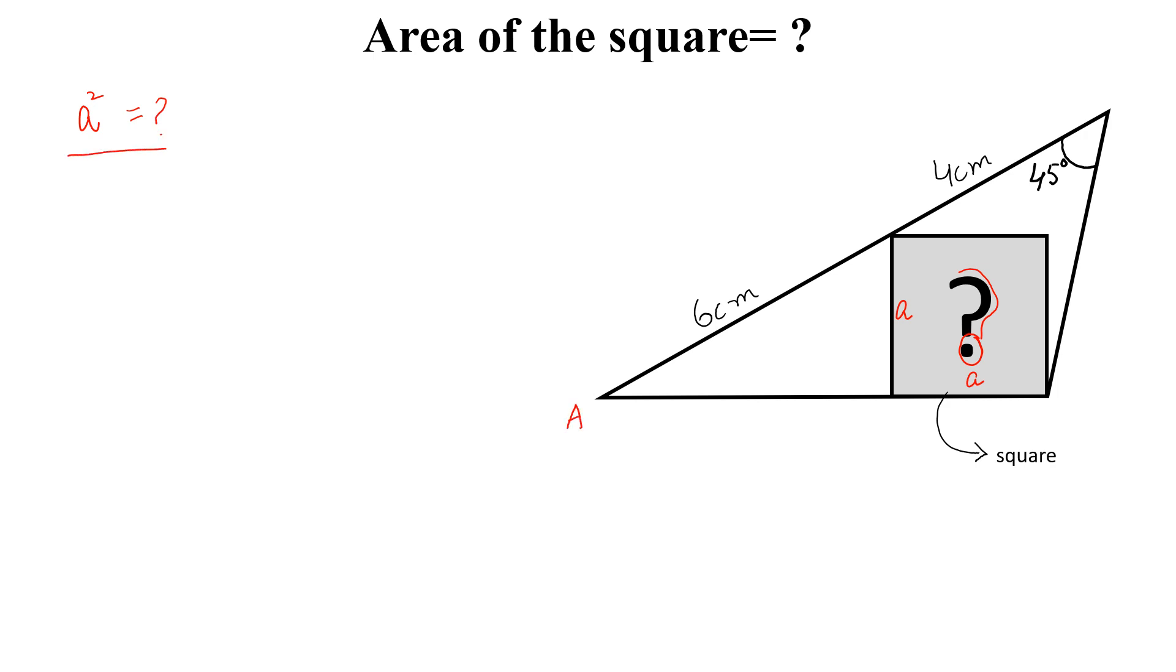Let this is A, this is B, this is C, this is D and this is E. Let this angle is alpha, this is 45 degrees and this is alpha.